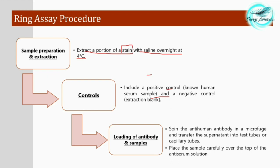Next, spin the anti-human antibody in a microfuge and transfer the supernatant into test tubes or capillary tubes. The ring assay is carried out in a test tube or capillary tube, so we first put the antibody into the tube.